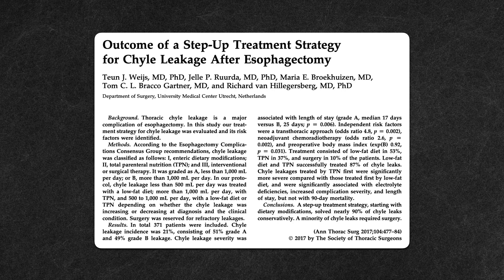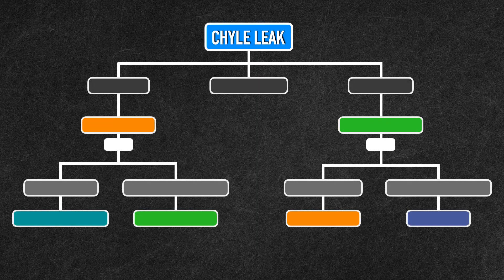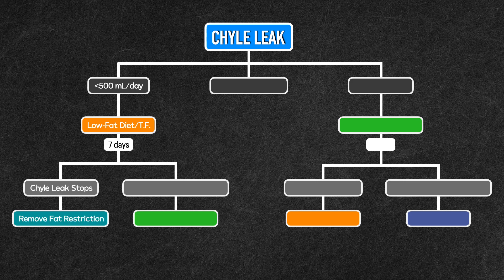To further illustrate how this decision is made, I'll highlight a prospective study published in 2017 by Weiss et al. This study took patients who developed a chyle leak after an esophagectomy and put them through a simple algorithm to determine the nutrition therapy they would receive. Patients with an initial chyle output of less than 500 milliliters per day were started on a low-fat diet or enteral feeds for 7 days. If the output stopped after 7 days, the low-fat restriction was lifted. If the output persisted or increased during the 7 days, the diet or enteral infusion was stopped and the patient was transitioned to parenteral nutrition.